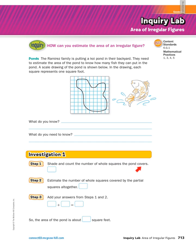Step one says shade and count the number of whole squares. Step two says estimate the number of whole squares covered by partial squares. I'm going to count the whole squares first — the ones that are exactly full squares. Counting: one, two, three... all the way to 35. So I got 35 whole squares.